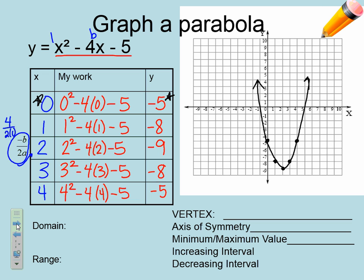Now let's identify key features. We've done domain and range before. Domain is x values — are there any limitations on what I could plug in here? No, so the domain is all real numbers. The range is a description of the y values. Looking at the table, y goes from negative 5 to negative 8 to negative 9, then back up to negative 8 and negative 5. The lowest y value is negative 9, so y is greater than or equal to negative 9.